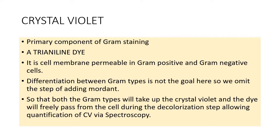We give bacteria time to form the biofilm, then discard the excess planktonic cells — the free-flowing cells — and discard the excess growth media. Then we allow crystal violet to react with the biofilm. After a few minutes of incubation, we discard the excess crystal violet, add acetic acid or a decolorizing solution such as ethanol, and retrieve the crystal violet taken up by the bacterial cells. That is what we quantify using spectroscopy — this is the simple principle of the crystal violet biofilm assay.